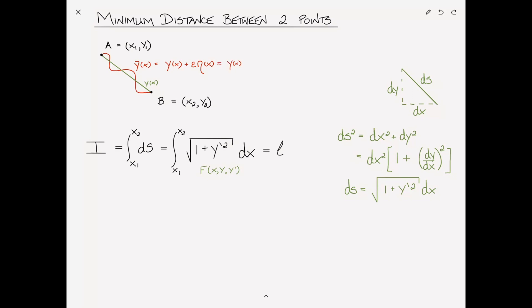and that is equal to the actual path, or the optimal path, y*, plus epsilon times eta of x. And that, using our delta operation, the varied path is equal to the optimal path, or extremal, plus the variation. In order for i to be an extremal, or a stationary point, its variation, del i, would have to be equal to zero.